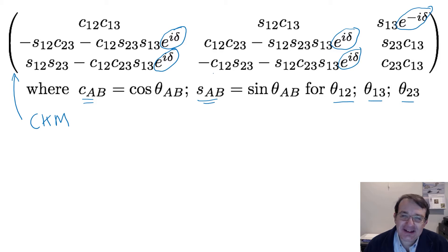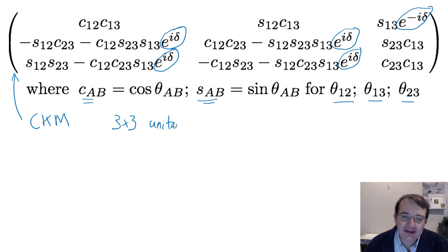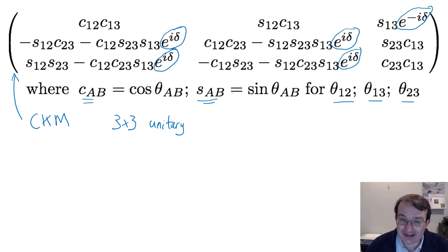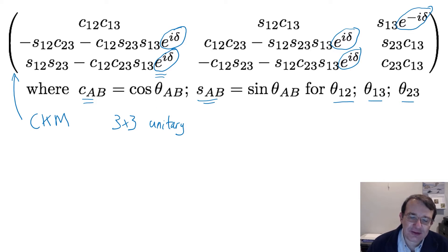The CKM matrix is a three-by-three unitary matrix, and it is the smallest unitary matrix that requires a complex phase. If you have a two-by-two unitary matrix, you just have a single mixing angle and no complex phase. The three-by-three is the first one that requires a complex phase. If you go to four-by-four, you just get more complex phases and more mixing angles — nothing new. So three-by-three is the smallest one that gives us this complex phase, which means that to get CP violation in a process, you need to involve all three generations of quarks.